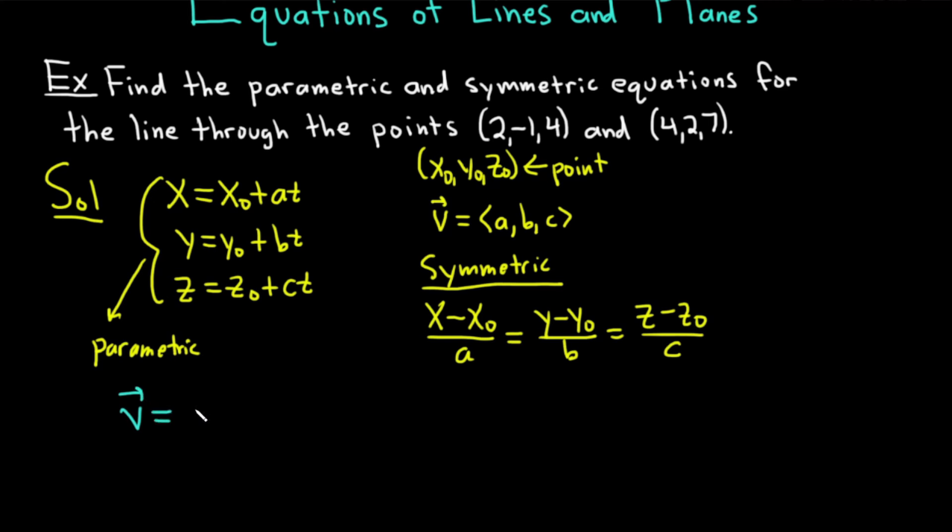So to find our parallel vector, which I'll call v, basically we can just subtract the points. We can do 2 minus 4, subtract the coordinates. And then we can subtract -1 minus 2, subtracting the second coordinates. And then we can subtract 4 minus 7, subtracting the third coordinates.